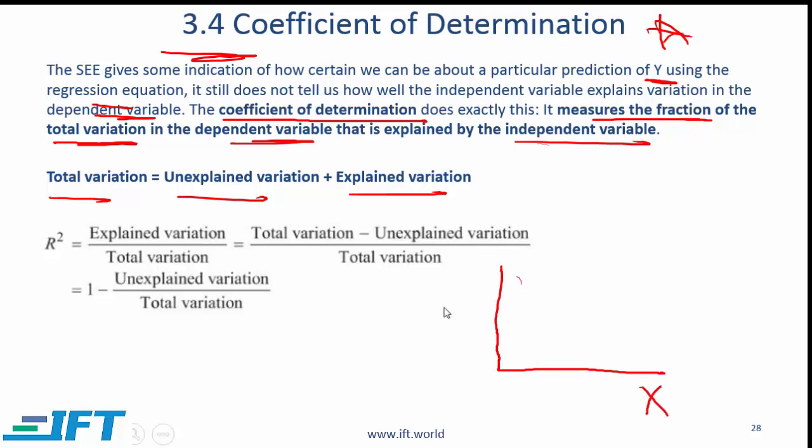X is our independent variable. Y is the dependent variable. Let's say that you have a data set that looks like this. So this is your scatter plot.